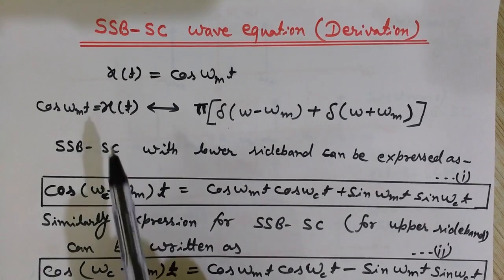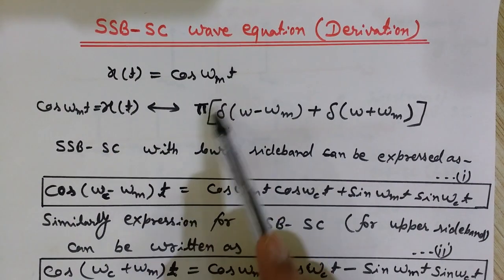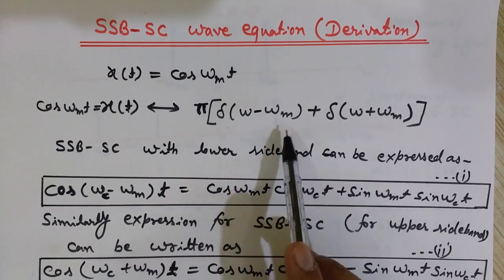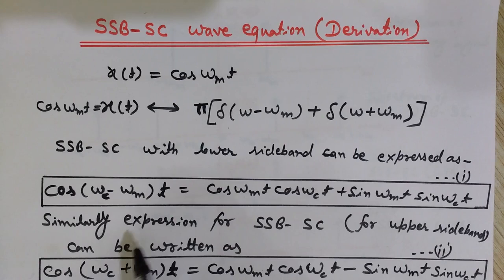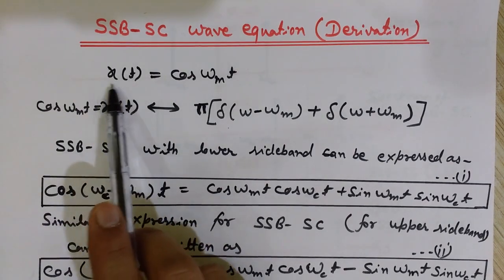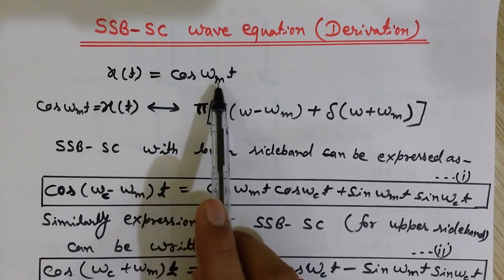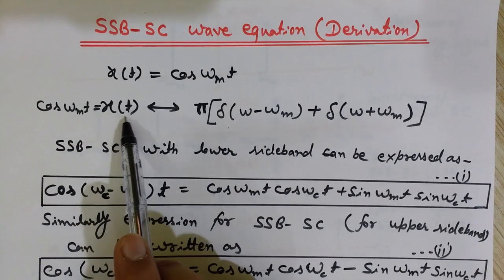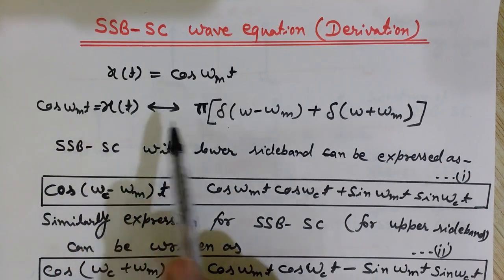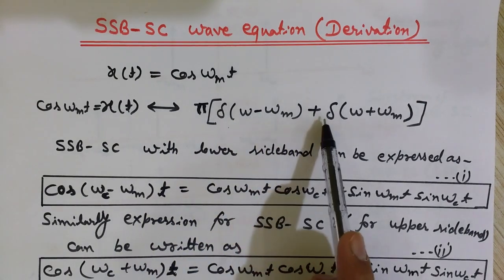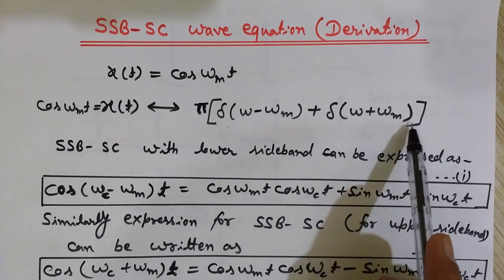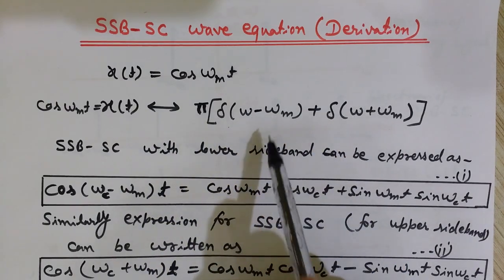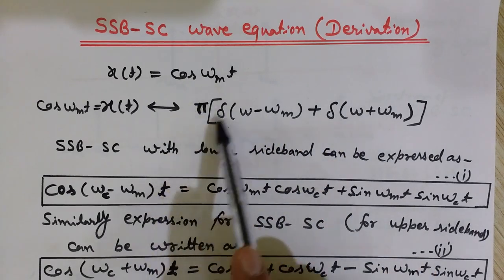Now let's derive the SSB-SC wave equation. Consider a modulating signal x(t) = cos(ωm·t). We know that the Fourier transform of cos(ωm·t) is π[δ(ω − ωm) + δ(ω + ωm)]. This contains two shifted impulse signals at +ωm and −ωm, each with amplitude π.